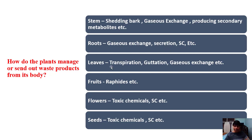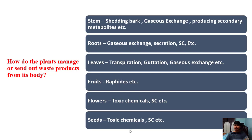Roots have tiny pores called lenticels through which waste gases are sent out. Waste liquids produced in plants are also secreted through roots into the soil, and roots produce some secondary metabolites. Leaves have stomata through which transpiration and guttation processes take place, and waste gases are also released. Fruits transport waste materials to the outer covering — those waste cells are called raphides. Flowers and seeds also contain some toxic chemicals or secondary metabolites.